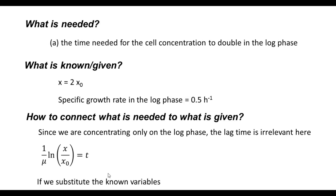If we substitute the known variables, 1 by μ is 0.5, x of requirement here is 2 x0 by x0. x0 can get cancelled. This is ln 2. Therefore, ln 2 by 0.5 equals t. ln 2 is 0.693—this is a nice number to remember, 0.693. 0.693 by μ is the time that it usually takes to double. So that would turn out to be t equals 1.39 hours.